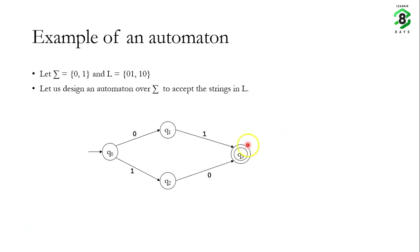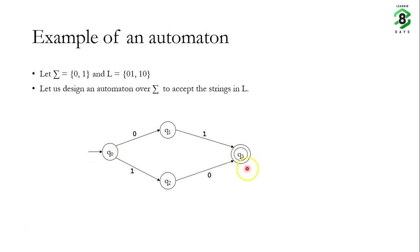Q3 is called the final state or accepting state. This is indicated because the state is drawn with two concentric circles. If you see a state with two concentric circles, you should understand that this is a final state, just as a state with an incoming unlabeled arrow is understood to be the initial state. Importantly, a machine has only one initial state, but it can have more than one final state, as we will see with more machines in this course.